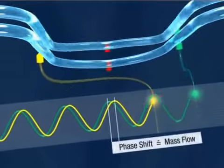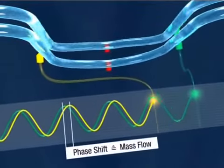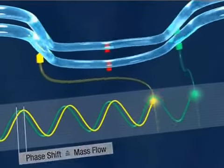A phase shift occurs between the first and the second sensor. The mass flow rate is derived from this phase difference.